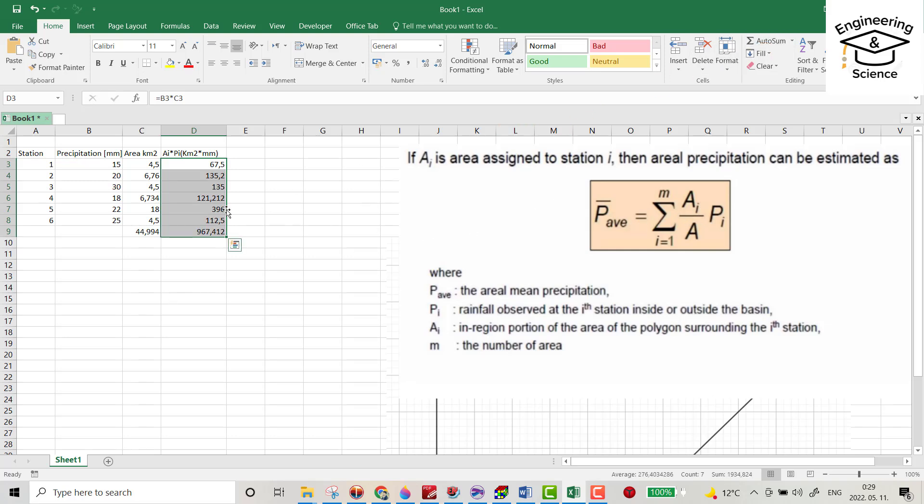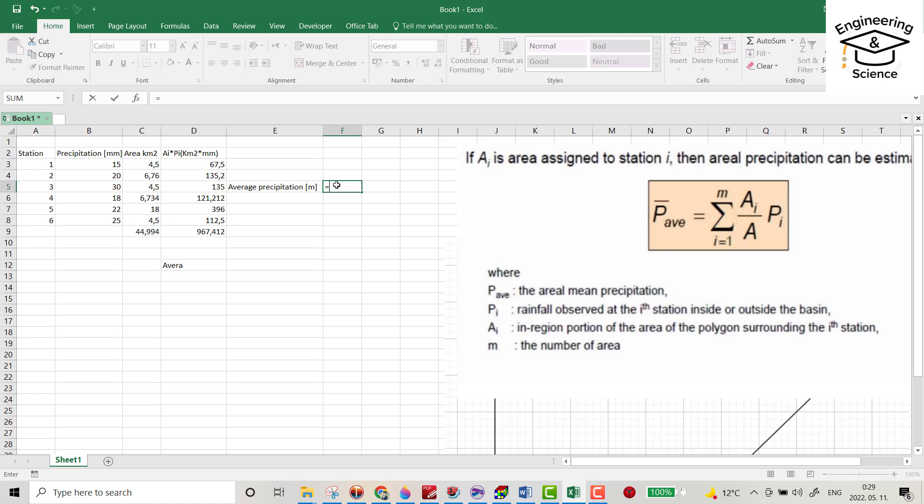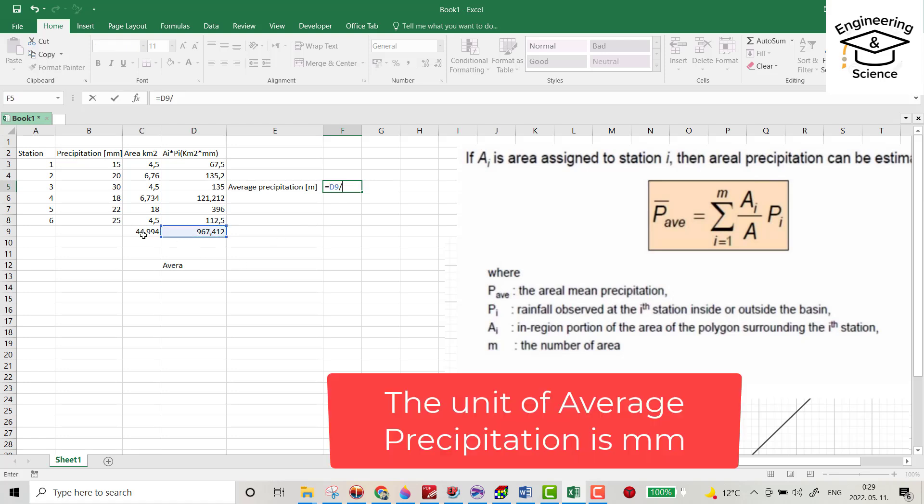Now just this one divided by this one, we get average value. So average precipitation in millimeters equals this one divided by this one, so 21.5 is the average precipitation for the area by using Thiessen polygon method. That's all, I hope it can be helpful. Have a nice time.